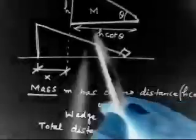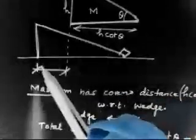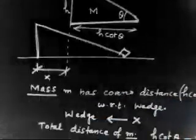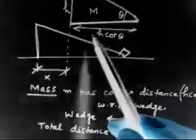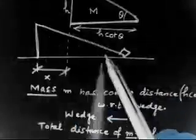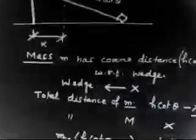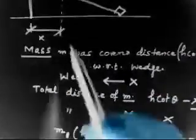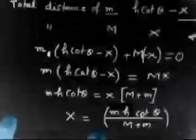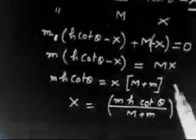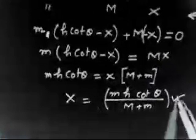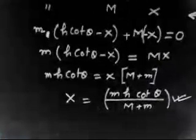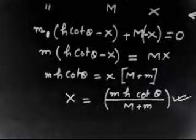Now I can apply the formula: M1 times delta X1 plus M2 times delta X2 equals zero. Substituting in: m times (H·cot(theta) minus X) plus M times X equals zero, which gives X equals m·H·cot(theta) divided by (m plus M). This is the displacement of the wedge. This is a pretty easy problem — we'll discuss the next problem.